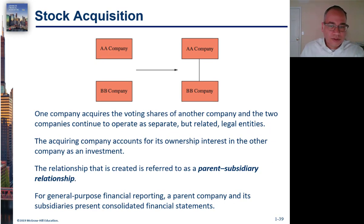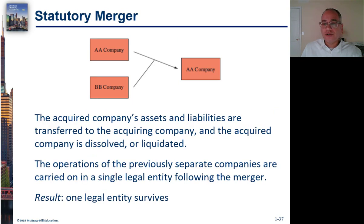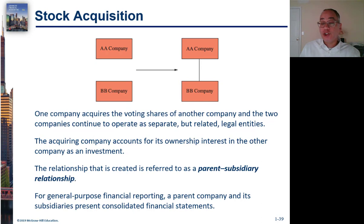Then you have what's called a stock acquisition. This is a situation where one company buys the stock of another company and eventually owns a majority of the stock to where it can exert control, but the corporation it purchased is still a separate corporation. That creates the parent-subsidiary relationship. Under a statutory merger or statutory consolidation, there's only one corporation that emerges, but in a stock acquisition you still have two separate corporations — a parent and a subsidiary.